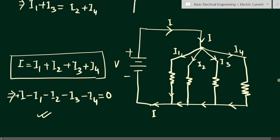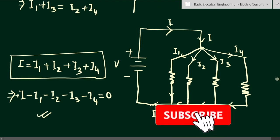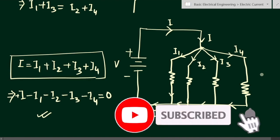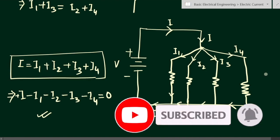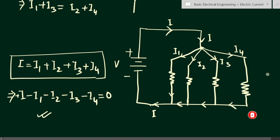This is Kirchhoff's Current Law. There is another law called Kirchhoff's Voltage Law, which is used for finding the voltage across resistances or across certain points. If you have any questions, please put them in the comment section below. Please like, share, and subscribe to my channel. Thank you.